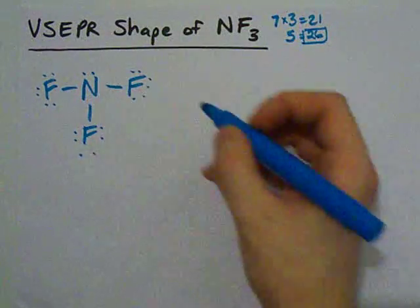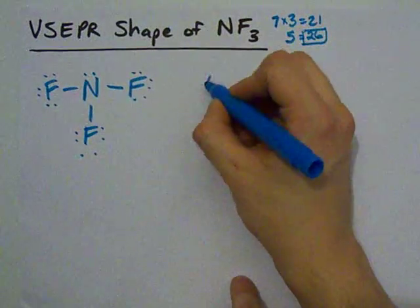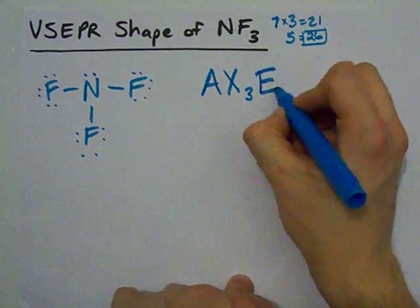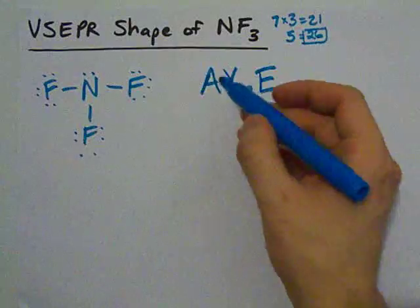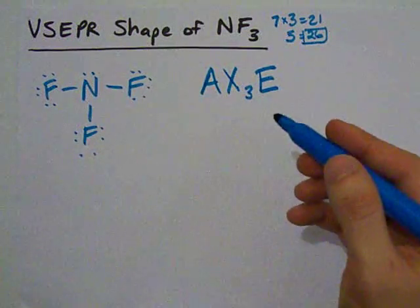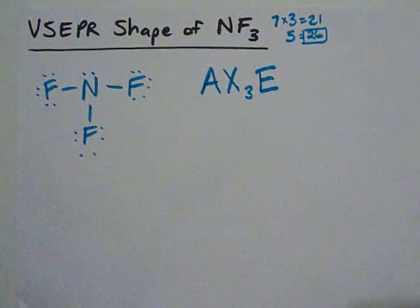And here we are. How many atoms are connected to the N? We have three atoms connected to the N and one lone pair on the N. This here is the VSEPR notation. But what really matters to me is the fact that we have three atoms and one lone pair.